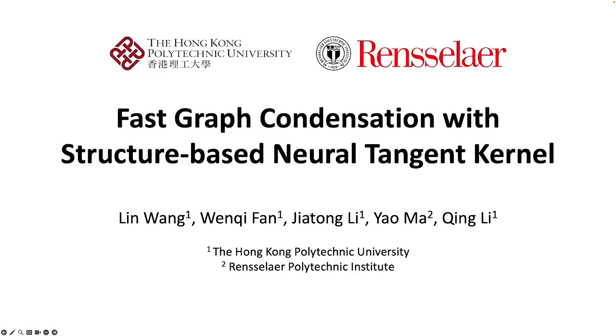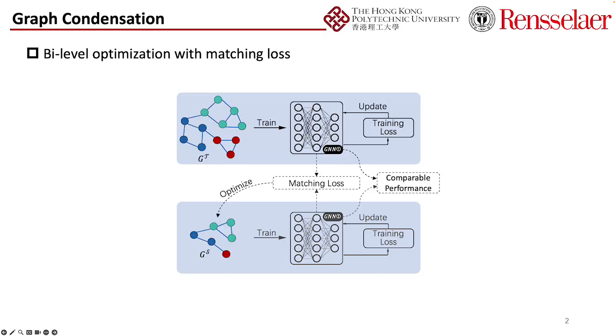Hello, I'm Wang Lin. Now I will give a brief introduction to our work titled Faster Graph Condensation with Stochastic Neural Tangent Kernel. Our goal is to represent the original training dataset with smaller synthetic graph data while achieving comparable performance.